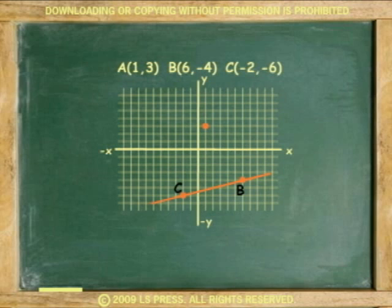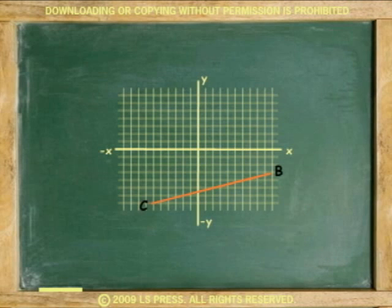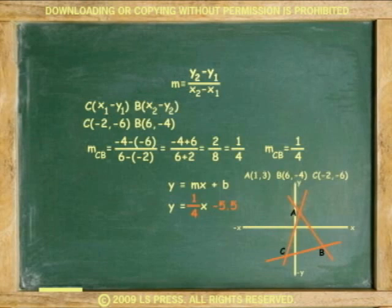Now, line CB. The slope is m equals negative 4 minus negative 6 over 6 minus negative 2 equals negative 4 plus 6 equals 2. 6 plus 2 equals 8. 2 over 8 equals 1 over 4. The slope is 1 over 4. And the y-intercept is 0, negative 5.5. Substituting the slope for m and the y-intercept for b, the equation is y equals 1 over 4 x minus 5.5.